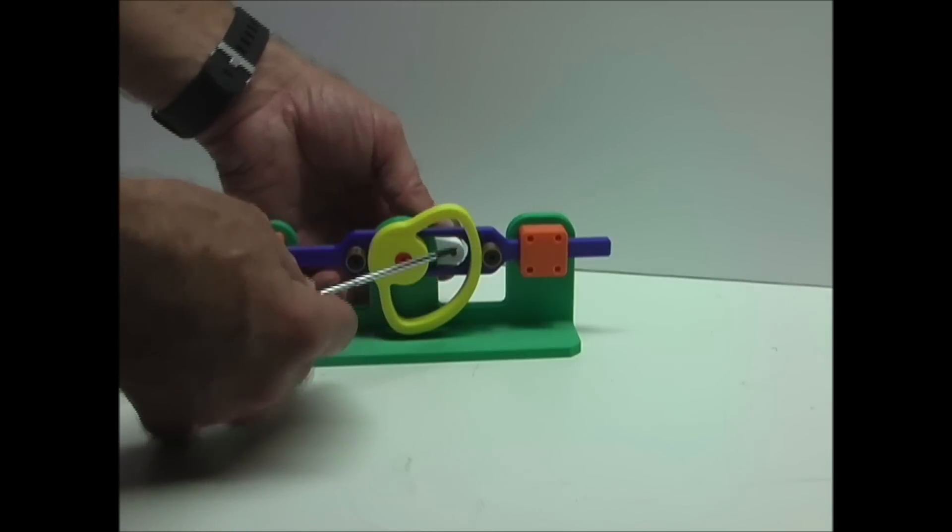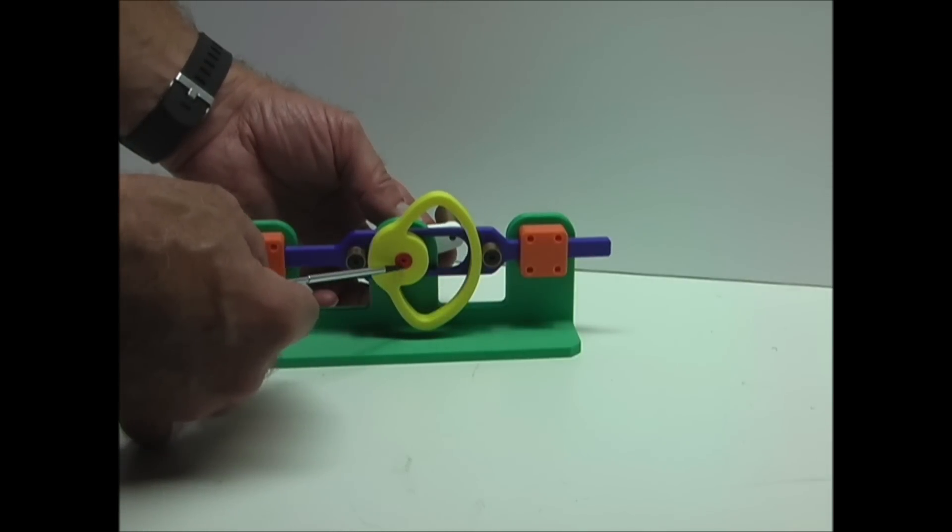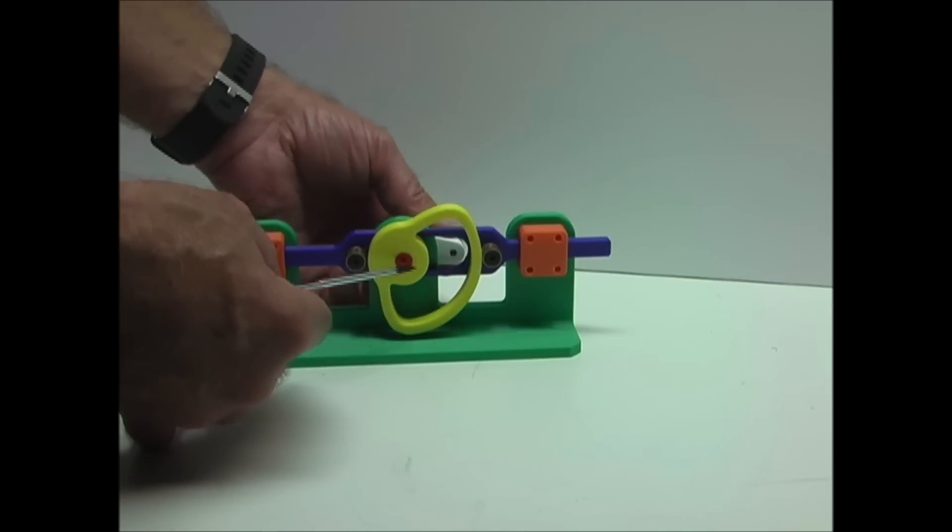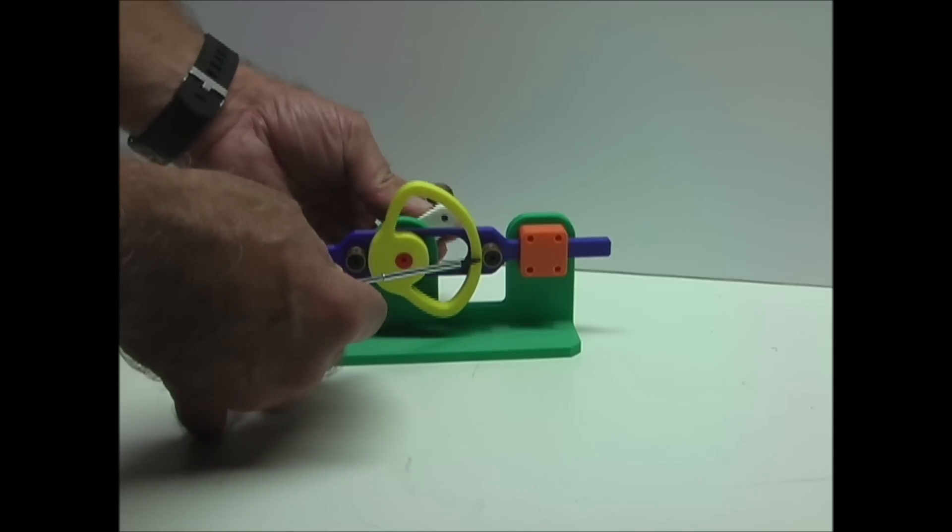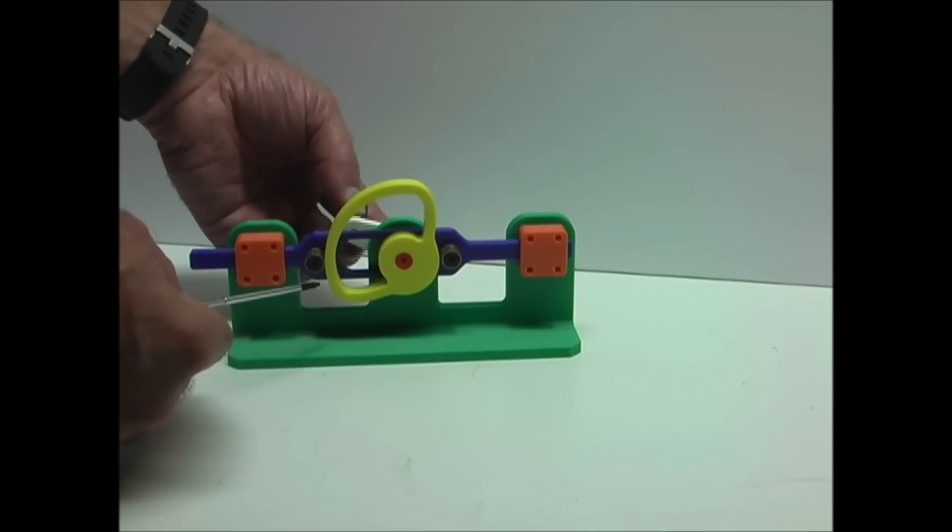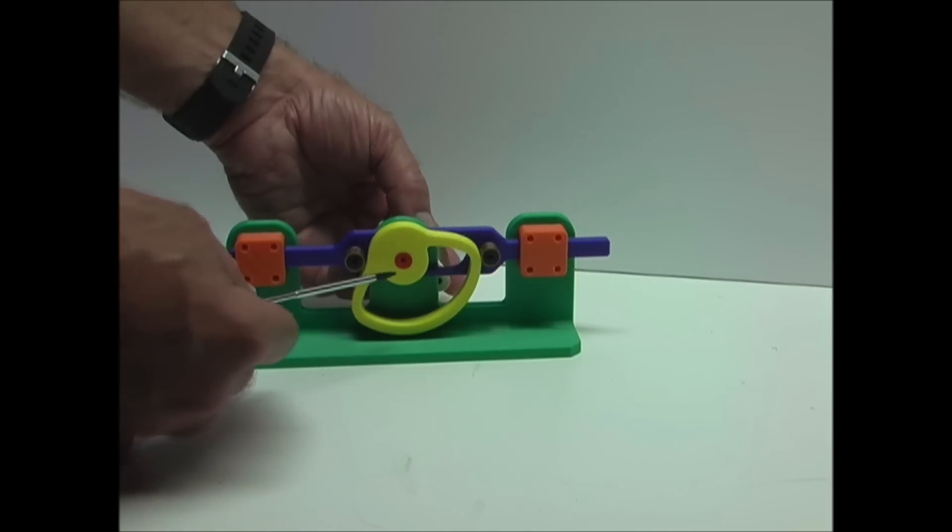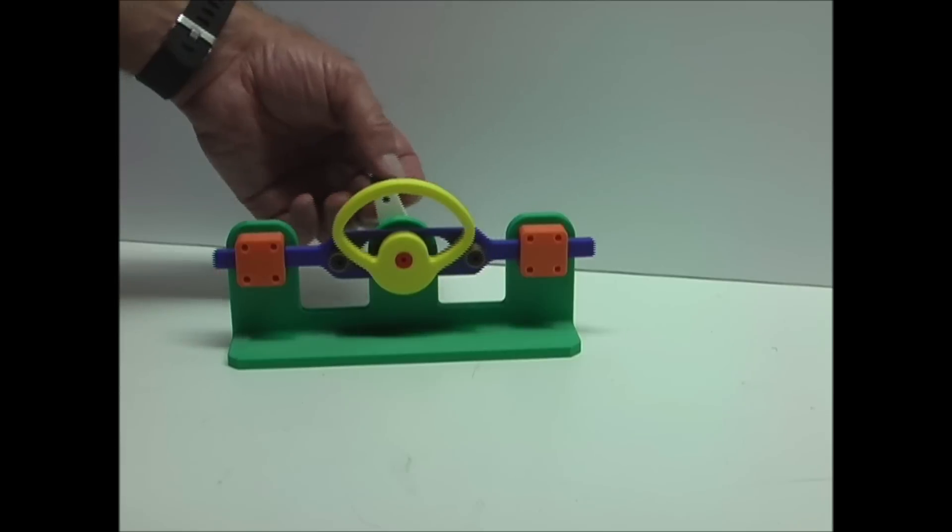And you can see on this side, this part of the profile is concentric to the center axis. So as it rotates through this part, there's no movement. And then it slides to the other side. And again on this side, there is no movement. So there is dwell on both ends of this one.